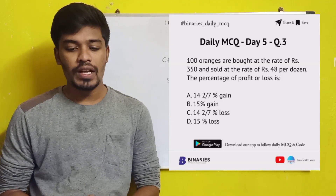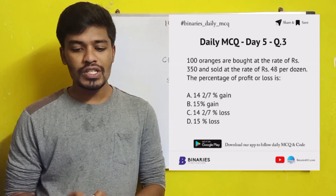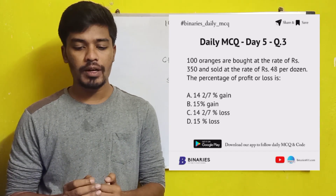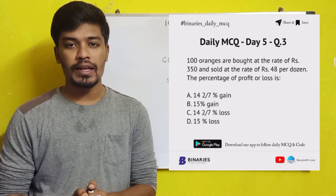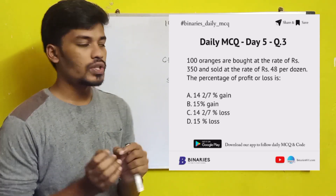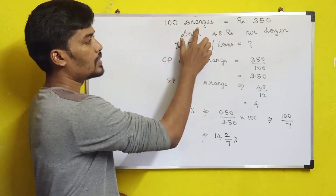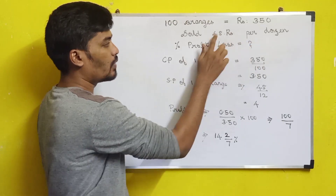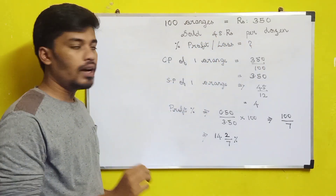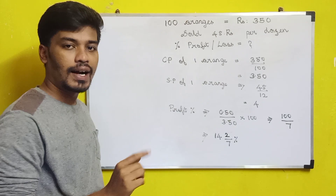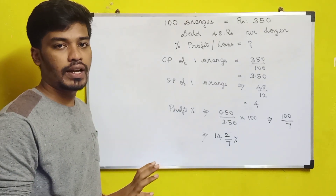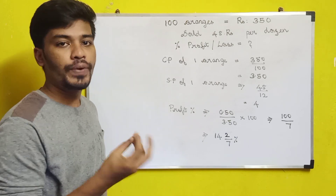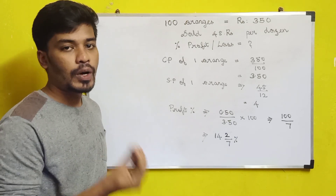The third question: 100 oranges are bought at the rate of Rs.350, and sold at the rate of Rs.48 per dozen. The percentage of profit or loss is? 100 oranges cost Rs.350. Selling price is Rs.48 per dozen. We need to find the profit or loss percentage using cost price.